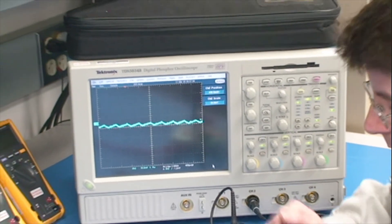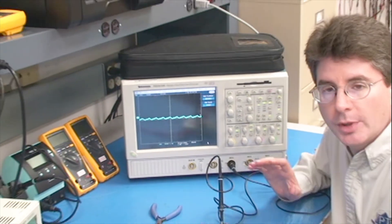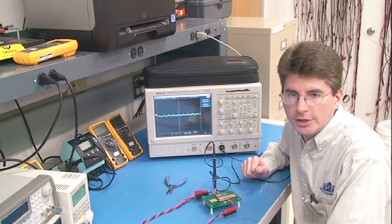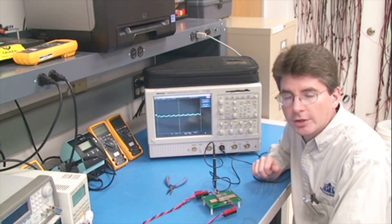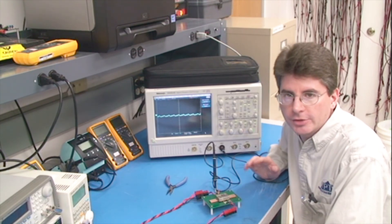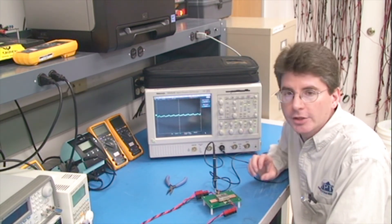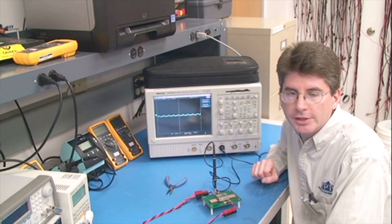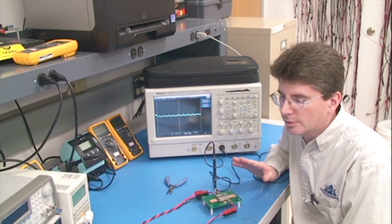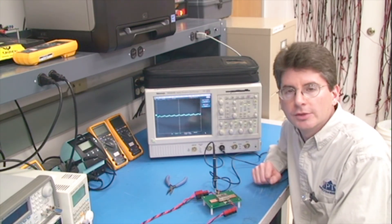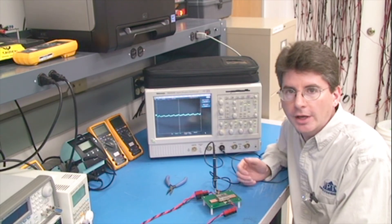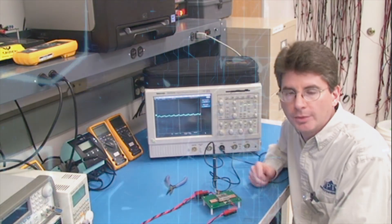Once again, the best way to reduce the output ripple on your DC-DC converter is simply with a low ESR ceramic capacitor added to the output. That can get you very low ripple, and it's very easy to do with few adverse effects. This concludes our video on DC-DC converter output ripple. Thank you.